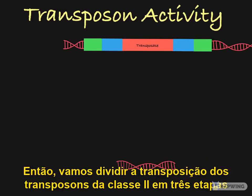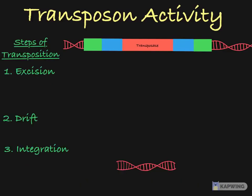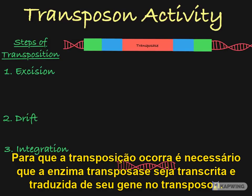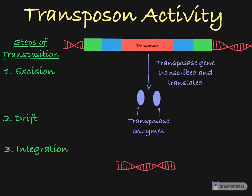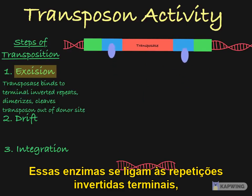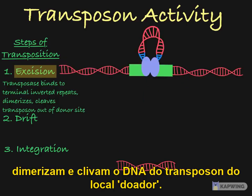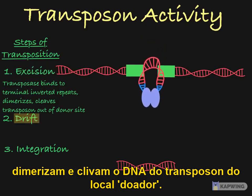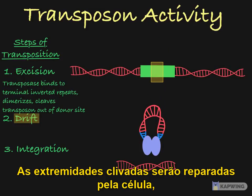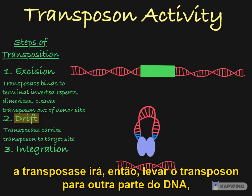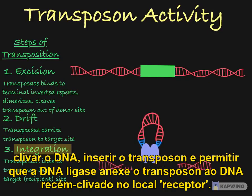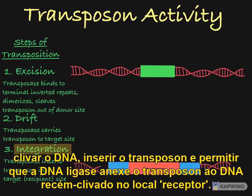Let's break transposition of Class II transposons into three steps: excision, drift, and integration. For transposition to occur, the transposase enzyme needs to be transcribed and translated from its encoding gene in the transposon. These enzymes will bind to the terminal inverted repeats, dimerize, and cleave the DNA transposon out of the donor site. The cleaved ends will be repaired by the cell. The transposase will then take the transposon to another part of the DNA, cleave the DNA, insert the transposon, and allow DNA ligase to attach the transposon to the newly cleaved DNA at the recipient site.